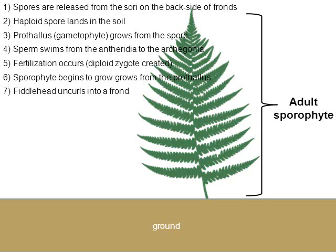Now the fern has reached its adult sporophyte stage. Once the fern reaches the adult sporophyte stage, the process simply repeats. The sorai on the backside of the frond will release spores into the air, and those spores will land and start this cycle all over again.